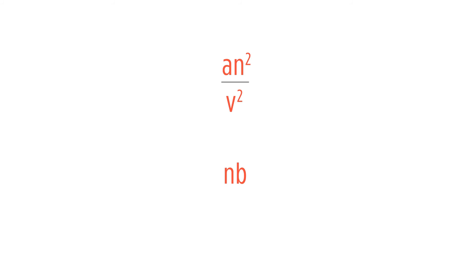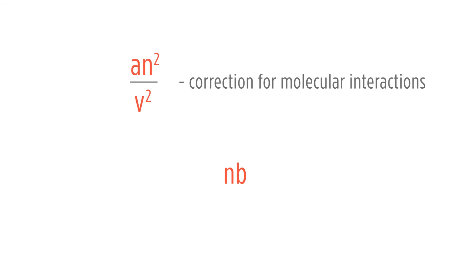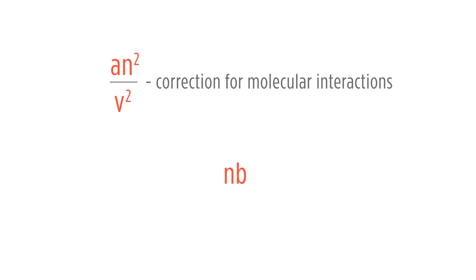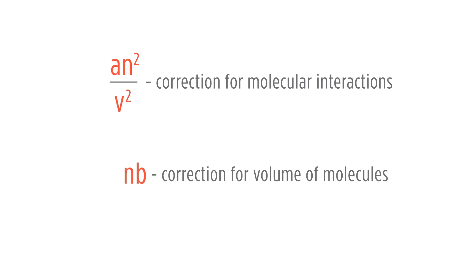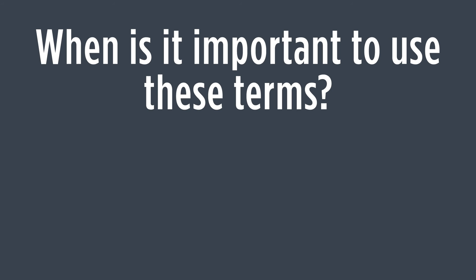If we look at these two terms, they have a specific correction. The constant A, which you look up for every specific gas, is part of the correction for molecular interactions. The constant B, also looked up for every separate type of gas, is the correction for the volume of the molecules — the fact that all gas molecules have a non-zero molecular volume.